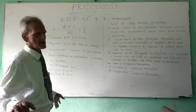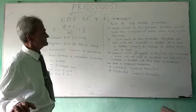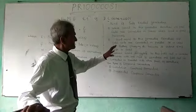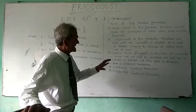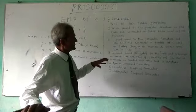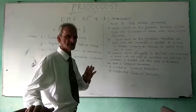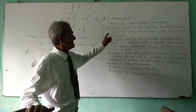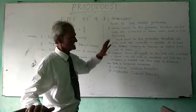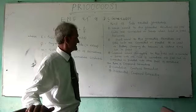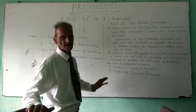Now, regarding self-excited generators, there are three types of self-excited generators: shunt-wound generators, series-wound generators, and compound-wound generators.